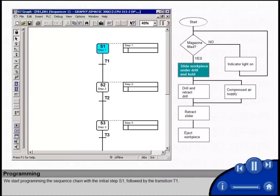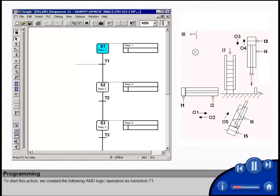We start programming the sequence chain with the initial step S1, followed by the transition T1. As a first action, the workpiece is to be moved under the drill. To start this action, we created the following AND logic operation as transition T1. The magazine is to be filled with workpieces, and the slider is in the starting position. A start signal, for example from a switch, activates the slider.